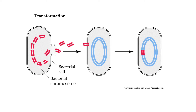To be a competent bacterium — meaning you're able to take up DNA from your environment — is not an easy task. Less than 1% of all bacteria are competent. The R strain bacteria, now carrying the gene to produce a capsule, becomes an S strain bacterium. So transformation is the transfer and integration of DNA fragments from a dead, lysed donor bacterium into a recipient bacterium.